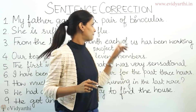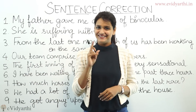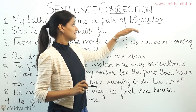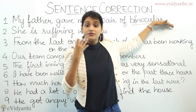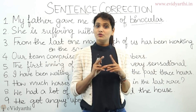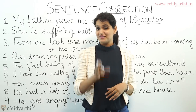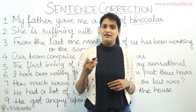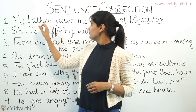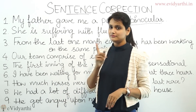First is: my father gave me a pair of binoculars. So what is wrong in it? Can you find it out? There is a spelling mistake — it's not pronounced 'binacular,' it's 'binoculars.' There are a few nouns which always carry an S. We don't say 'binacular.' Binoculars is a kind of object used to see distant sceneries a little closer. So we say: my father gave me a pair of binoculars. Binoculars — mind it.